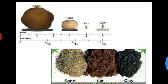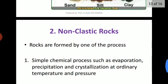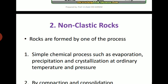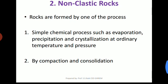These images show different types of clastic rock with their sizes in mm and inches. The second major type of sedimentary rock is non-clastic rock. Non-clastic rocks are formed by chemical processes such as evaporation, precipitation, and crystallization at ordinary temperature and pressure, or by compaction and consolidation.